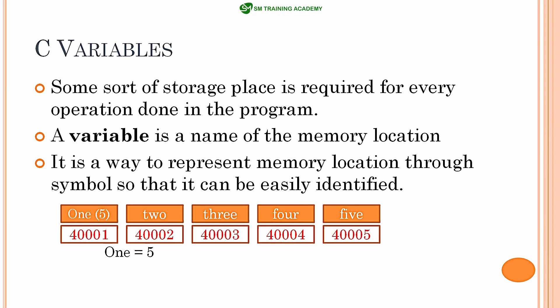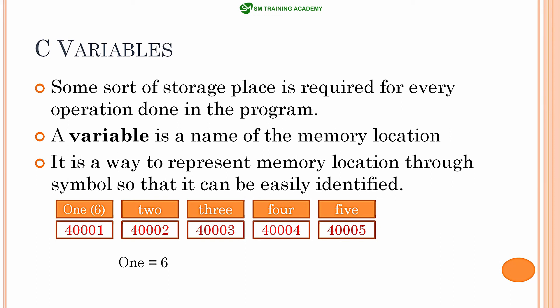And if I write one = 6, the number six will be stored in memory location 4001. For retrieving back the data also, I will be using the same name 'one' throughout my program. So a variable in C language is nothing but a name provided for a memory location, and we utilize that same name throughout the program for storing data and retrieving back data from that memory location.